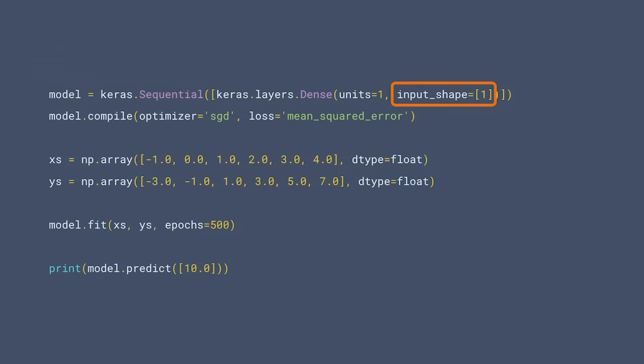When you compile the model, there are two functions, the loss and the optimizer. These are the key to machine learning. How machine learning works is that the model will make a guess about the relationship between the numbers. For example, it might guess that y equals 5x plus 5. And when training, it will then calculate how good or how bad that guess is using the loss function. And then it will use the optimizer function to generate another guess. The logic is that the combination of these two functions will slowly get us closer and closer to the correct formula.